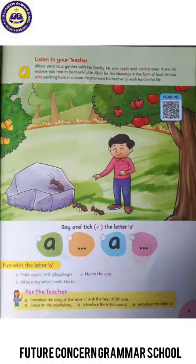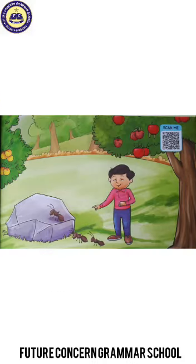Open your book page number 9. Here we have a picture. We have some things that we look at, such as apple tree, apricot tree, ants, and Akbar.